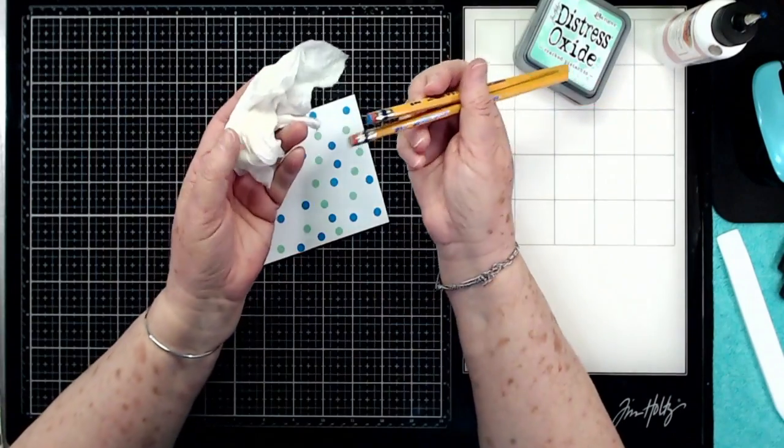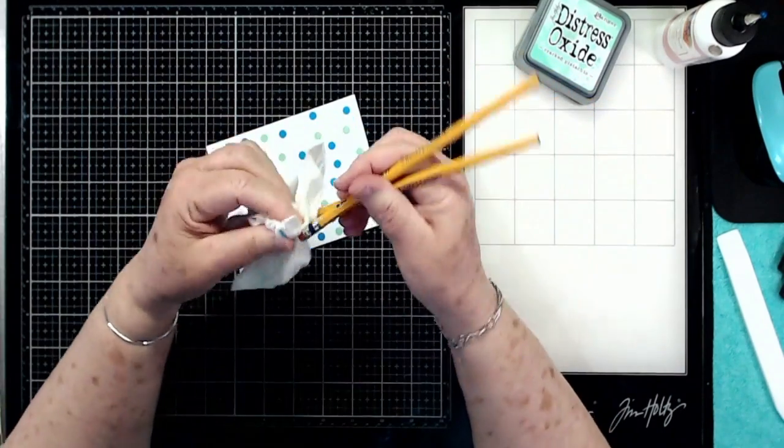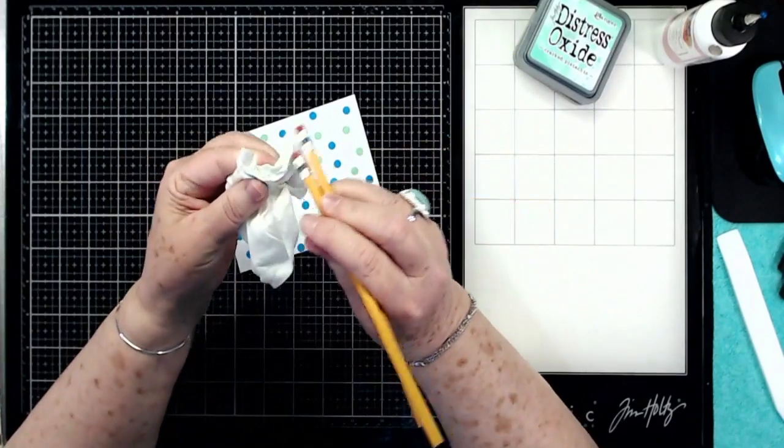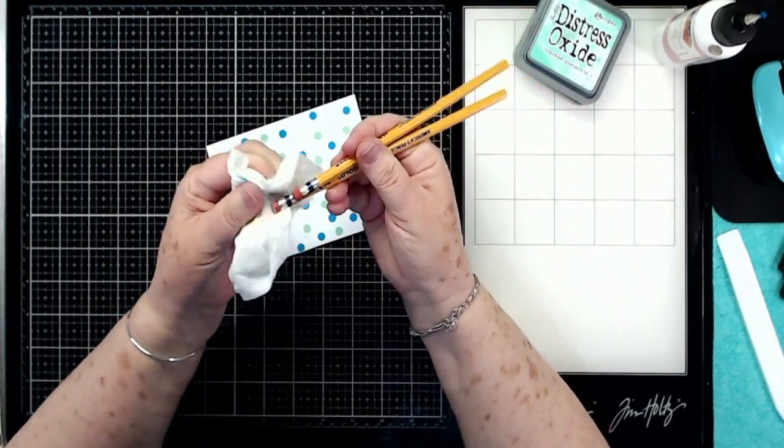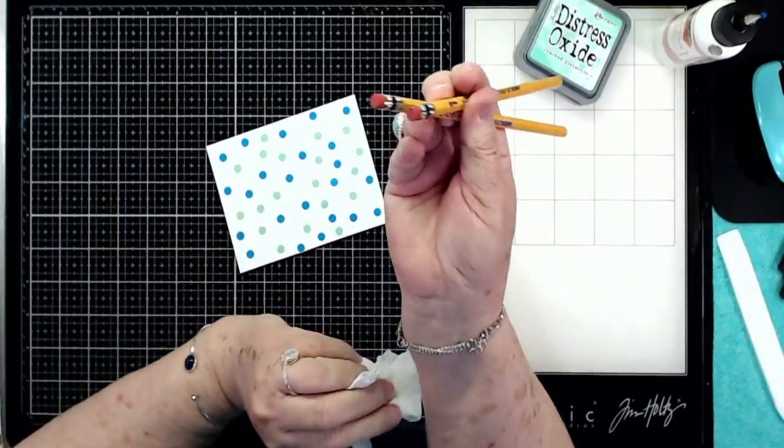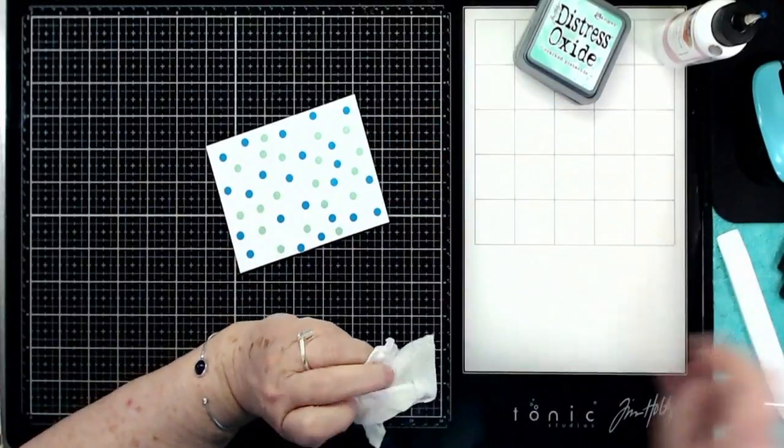Now in order to clean up your erasers, you can just use a baby wipe, wipe over them, or just use a rag that has water on it. Doesn't matter. And they're all cleaned up, ready to be used for something else.